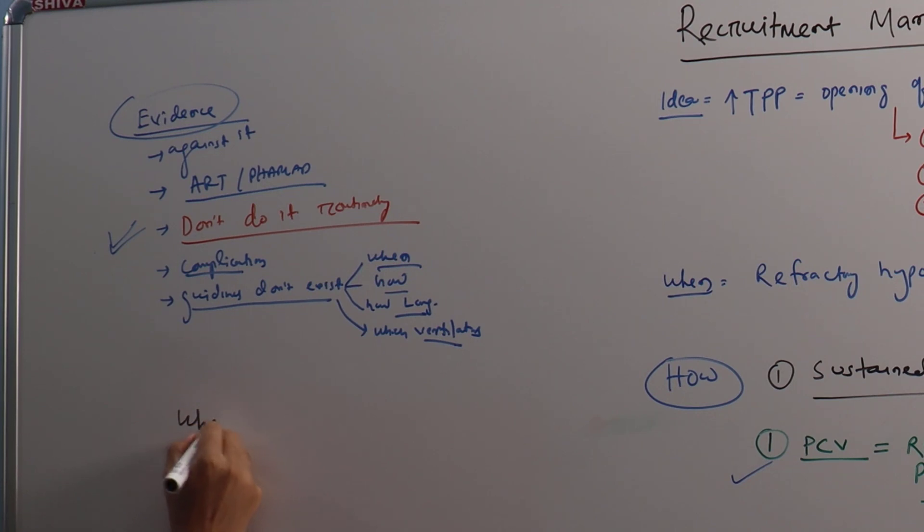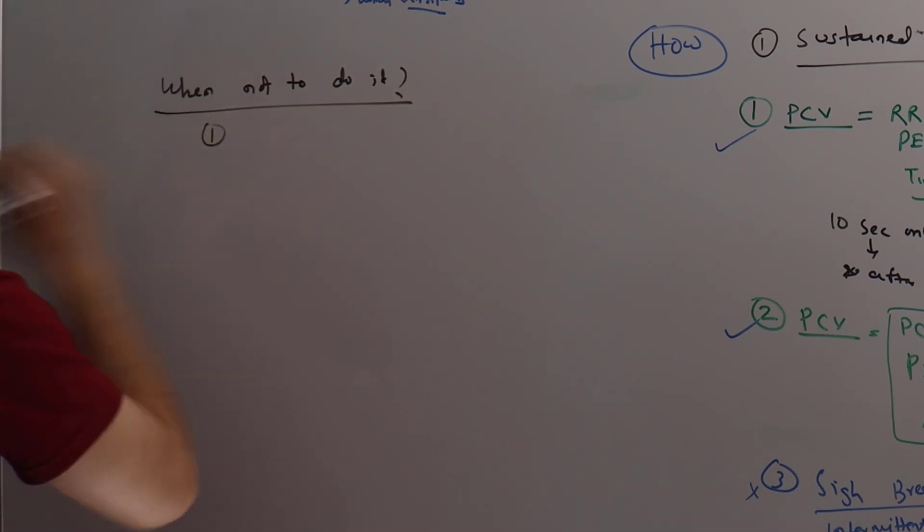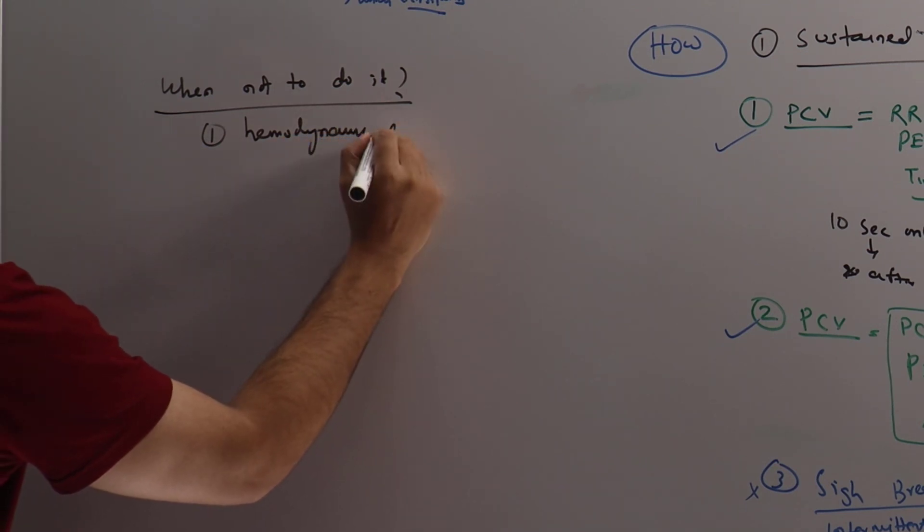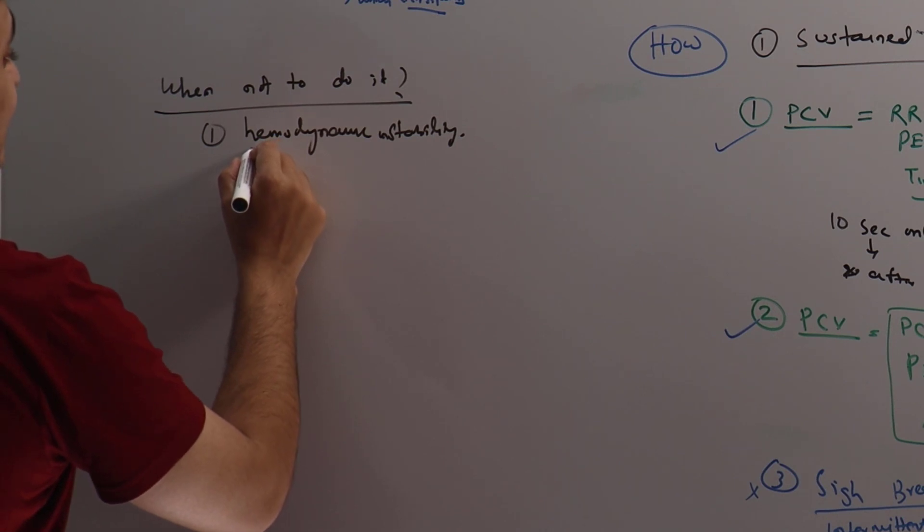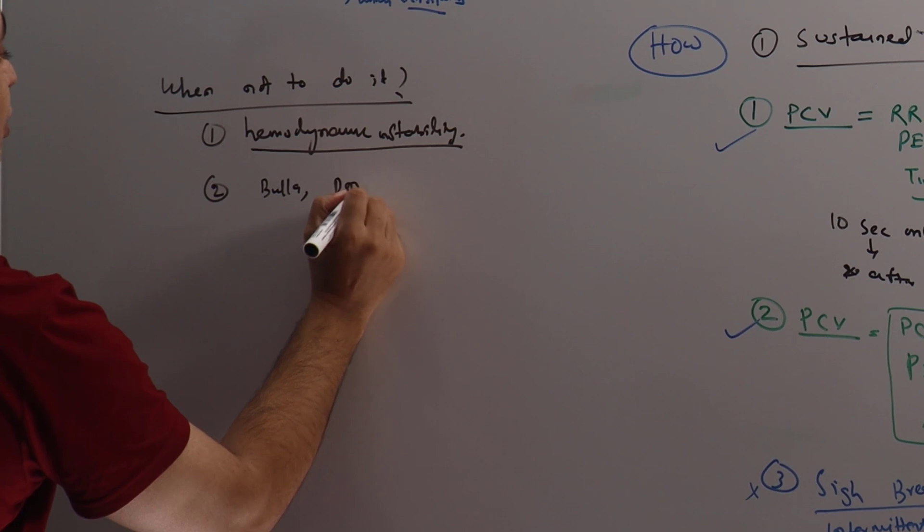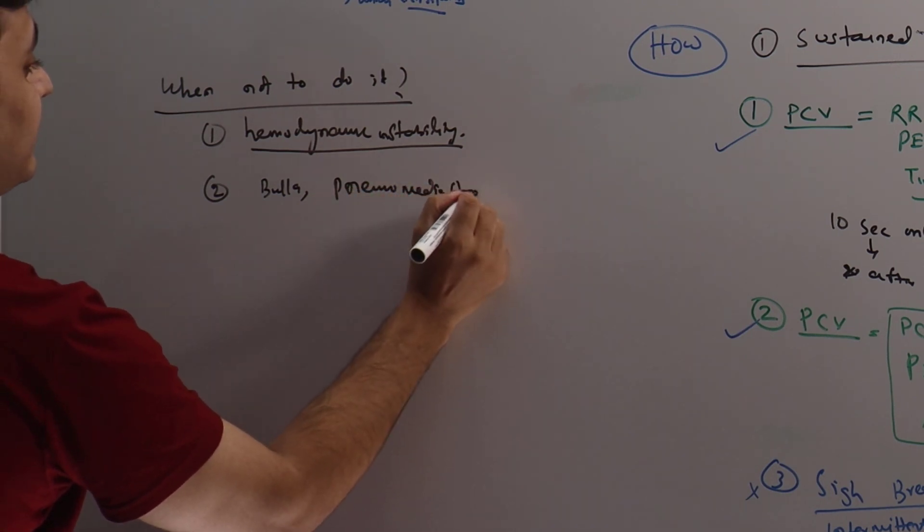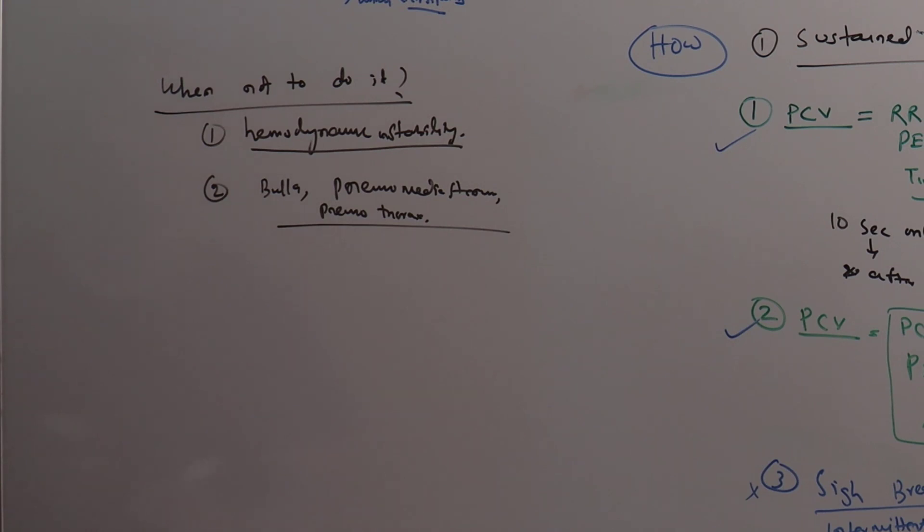When not to do it? Number one: hemodynamic instability. Patients on vasopressors, do not do it, because of high intrathoracic pressure during recruitment maneuver. There will be impedance of venous return and it can exacerbate the already existing hemodynamic instability. Second: patients with pre-existing bulla, pneumomediastinum, or pneumothorax. In those patients, it can produce tension pneumothorax, so do not do it.